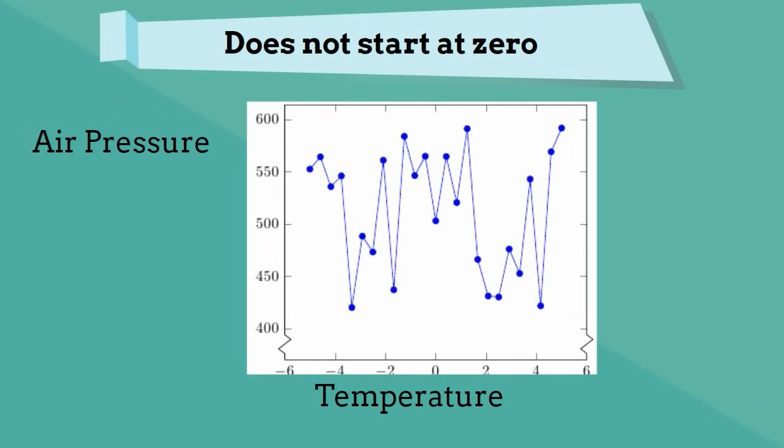You do not necessarily have to start at zero. You can use this squiggly line and start at any number. But again notice that the scale is consistent. It goes up by 50 each time.